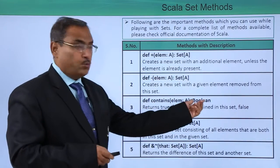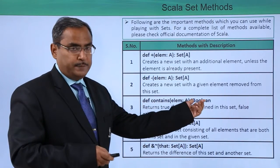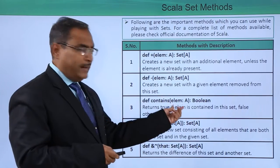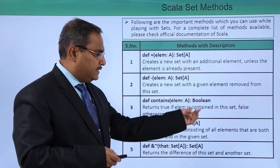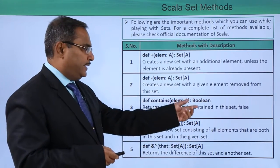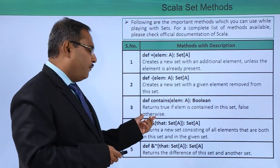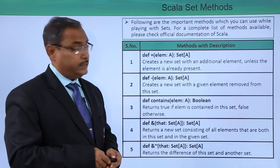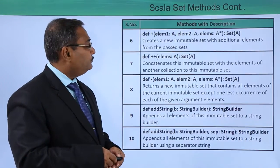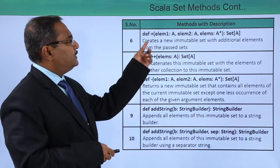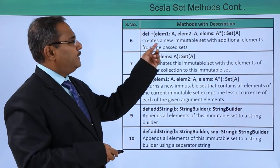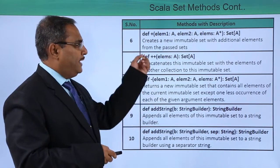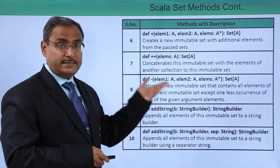The contains method returns a Boolean — true if the element is contained in the set, false otherwise. Then we have the plus-plus (++) method which creates a new immutable set with additional elements from the passed sets.